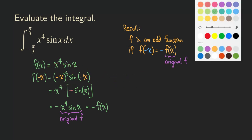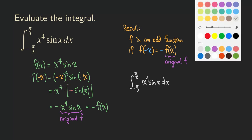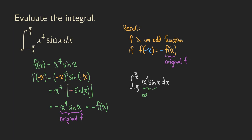Now, what do we know about this integral? When we have limits from negative pi over 3 to pi over 3 and the integrand x to the fourth times sine of x is an odd function, the answer is zero — as long as those two limits are opposite of each other. So we did not need to go through the whole process of integration by parts, but we still found the value for this integral. It only works when you have a definite integral, the integrand is an odd function, and the lower and upper limits are opposite of each other.